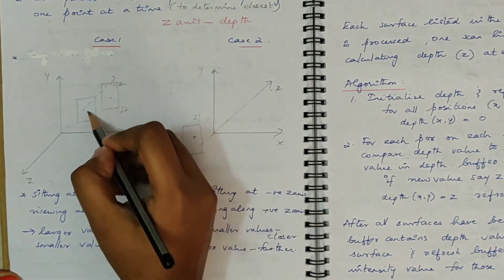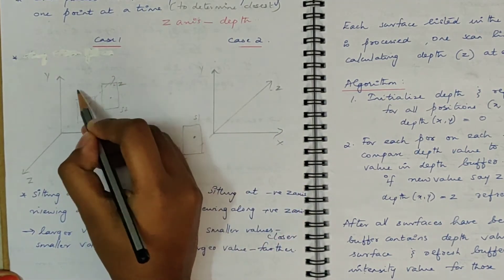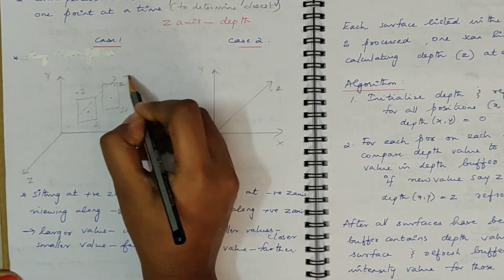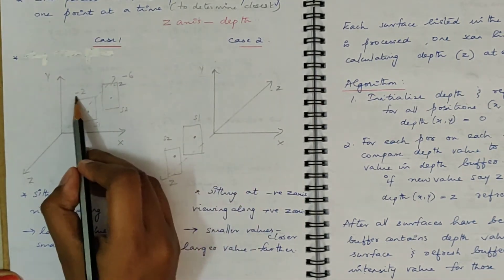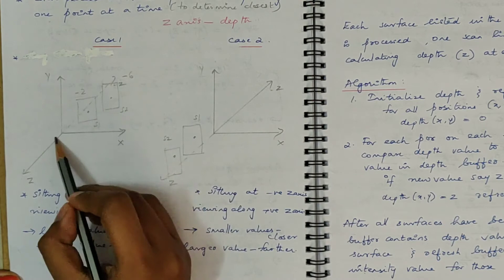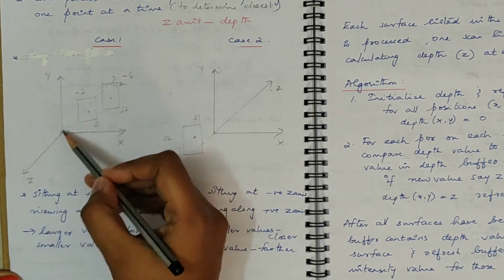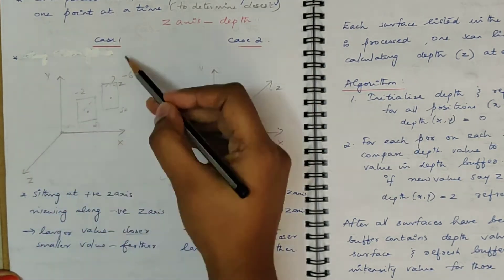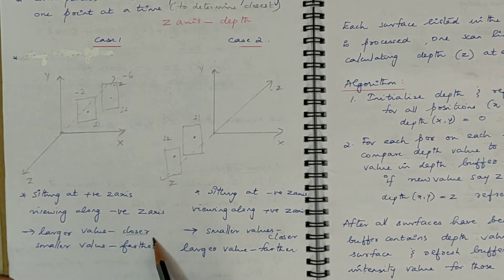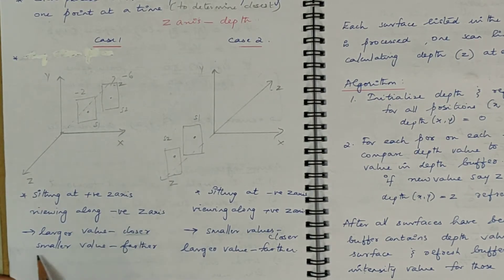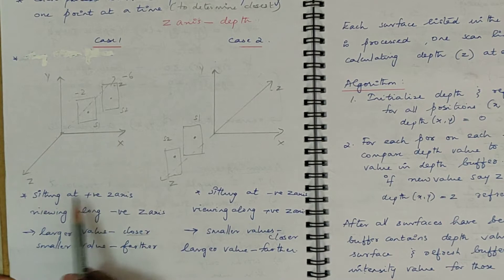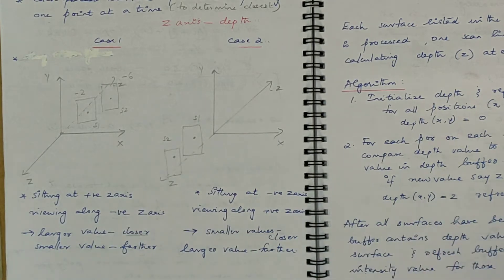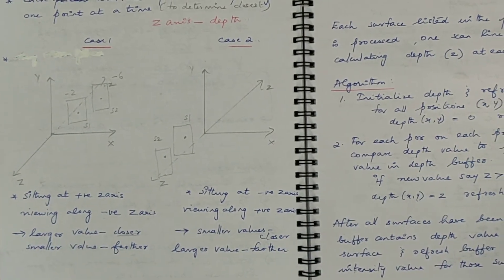For S1, the Z value will be, say, minus 2, and for S2, say, minus 6. Here you can see that minus 2 is larger than minus 6, but S1 is closer to the origin, closer to the view plane. So the larger values will be closer. If you are sitting at positive Z axis and viewing along negative Z axis, the larger values are going to be closer and the smaller values are going to be farther. Whether we are viewing along positive Z or negative Z, that determines which point is closer and which is farther.